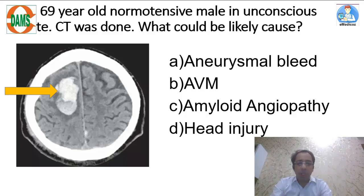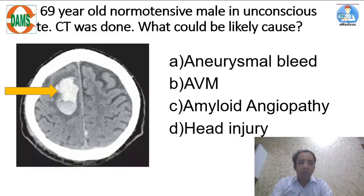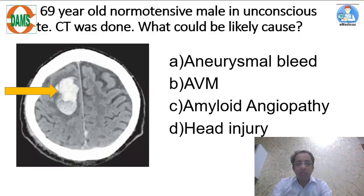In a young person, I would also consider AVM — arteriovenous malformation — as an answer. But this is a 69-year-old man. In an older person with a lobar hematoma, the top answer should be amyloid angiopathy. Amyloid beta deposits in the blood vessels leads to weakening of the vessel walls, causing the lobar hematoma. Punctate hemorrhages due to amyloid angiopathy are seen on susceptibility weighted imaging. Aneurysmal bleed would lead to subarachnoid hemorrhage, not a parenchymal bleed.